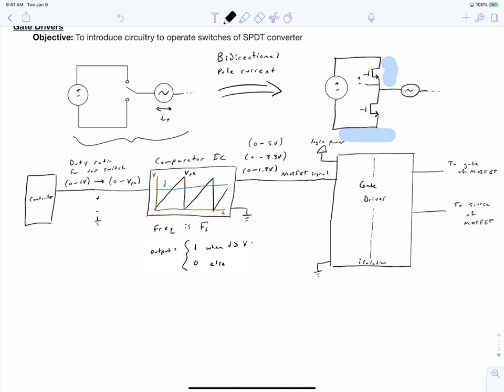It can be an opto-isolator where your MOSFET signal is an optical signal from an LED, and on the output side you have a photodiode that receives that optical signal. It can be magnetic coupling or capacitive coupling. The point is we are isolating the two sides so we can have a different reference for each side.